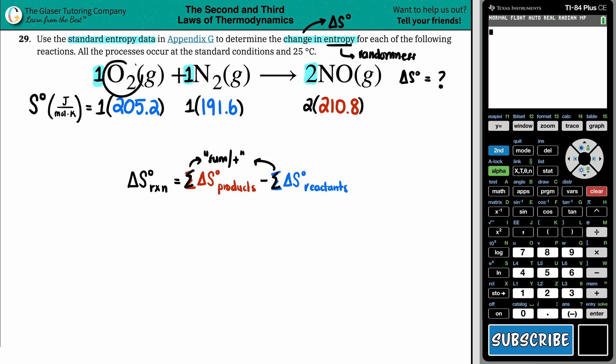Now you have to sum them up. Literally in the balanced equation, it's O2 plus N2. So I'm going to take the 205.2 and add it to the 191.6. In this case, since there's only one product, I don't have to add it to anything. I just got to times it by 2.